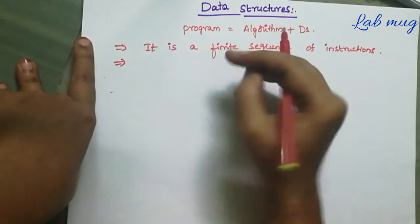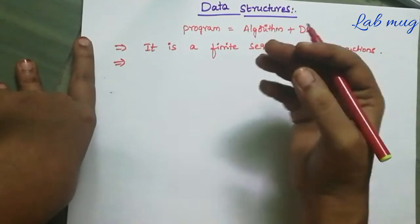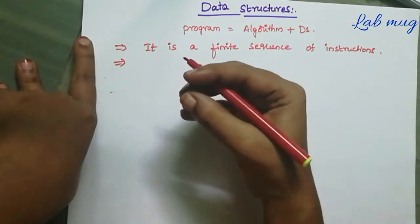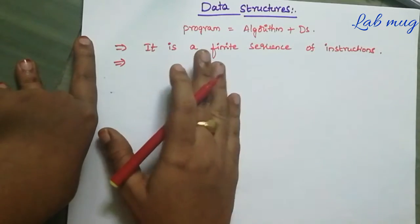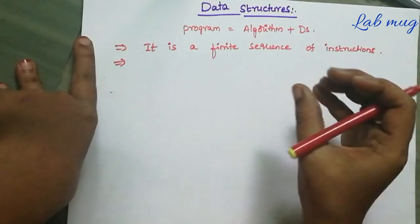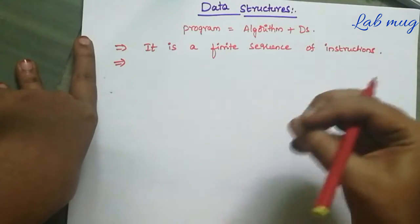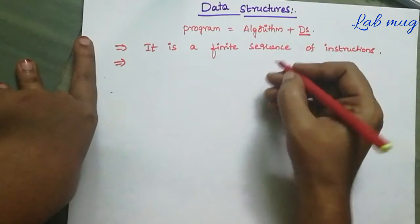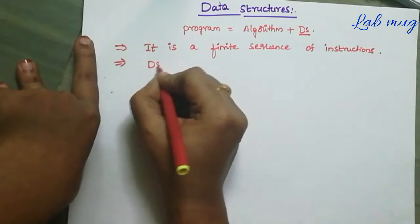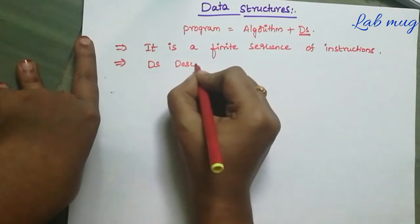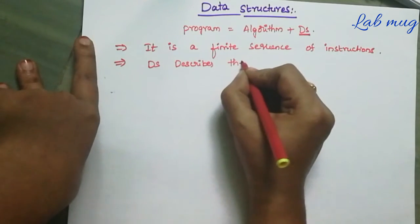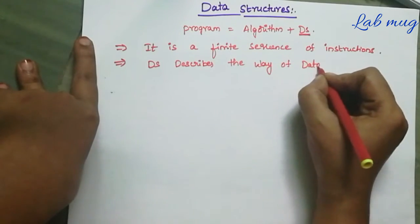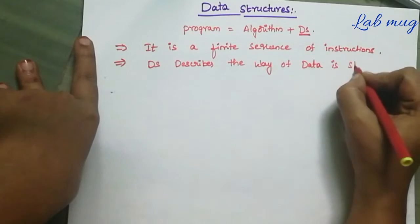What is a Data Structure? Data Structure anandu manam two types of ways loo cheppa chhu. So first of all, Data Structure niye chepthu nandu - it is the way the data is stored. Manam array loo data store chastham, variable loo data store chastham, alane data types use cheshi data store chastham. So Data Structure anandu - the way of data is stored.